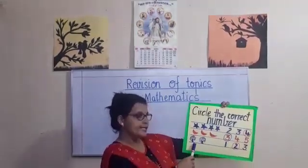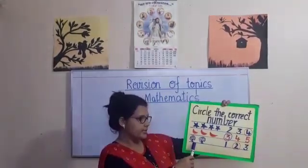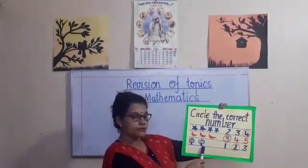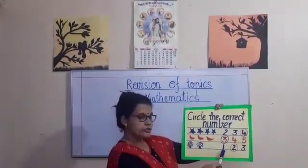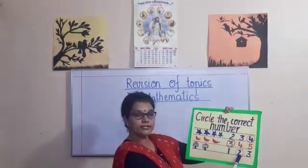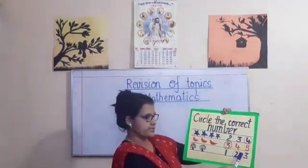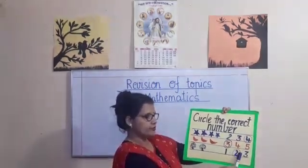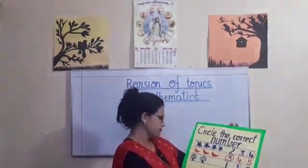The next line — start counting: 1 and 2. Is this number 2? No. Is this number 2? Yes. So you have to circle it.